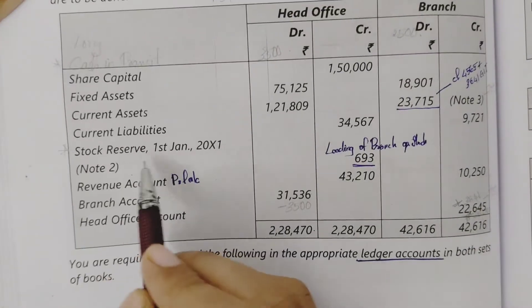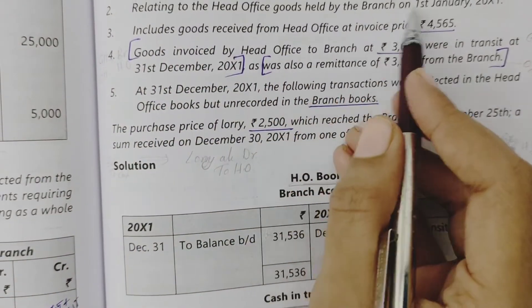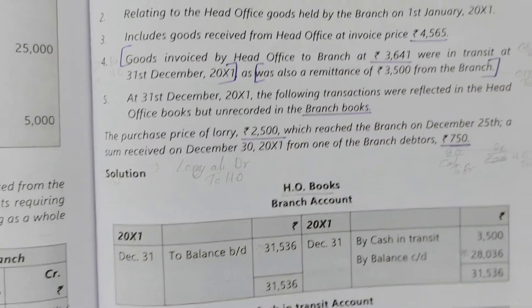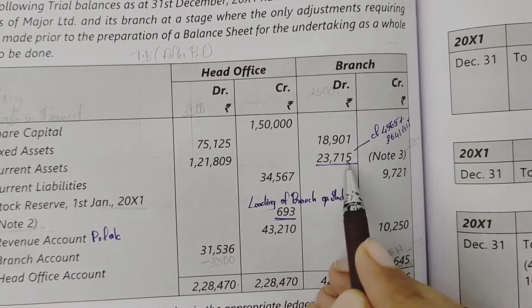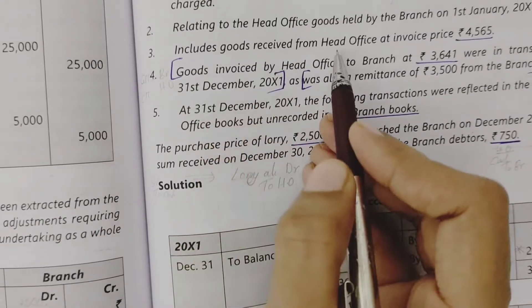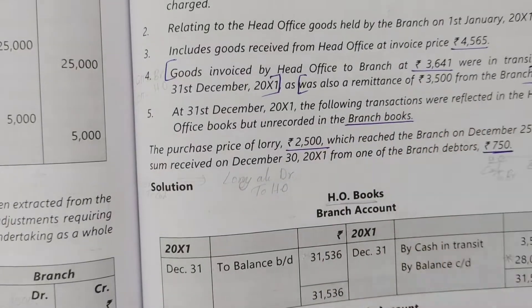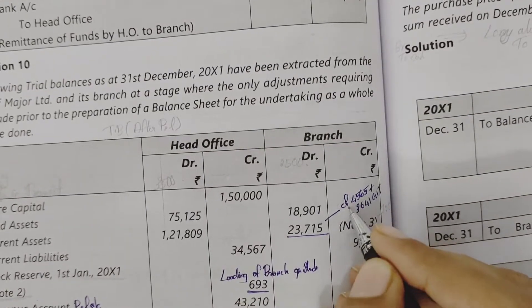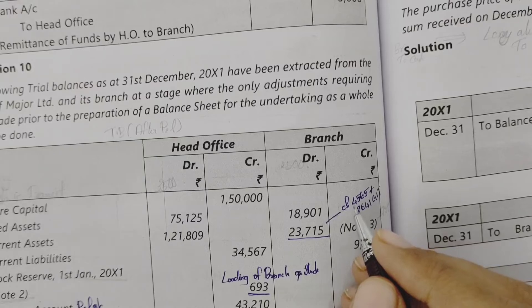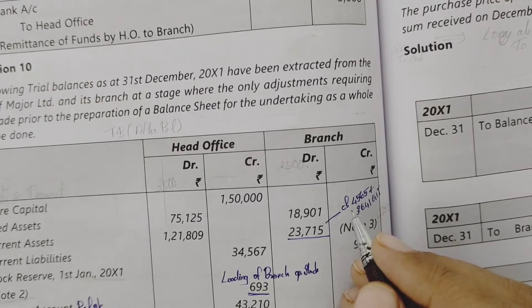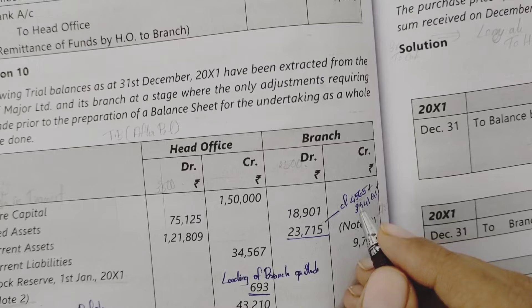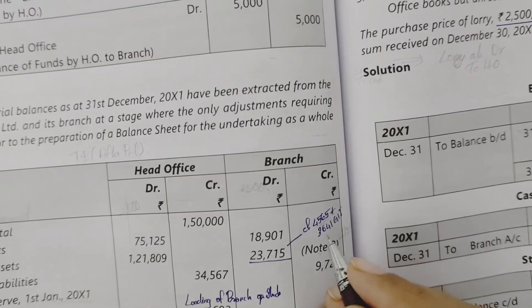Note 2 relates to head office goods held by the branch on 1st January 2011 — the opening stock reserve. The current set includes goods received from head office at invoice price of $4,565, and closing stock is $23,715 at invoice price. We cancel the loading element because the invoice price is $4,565.